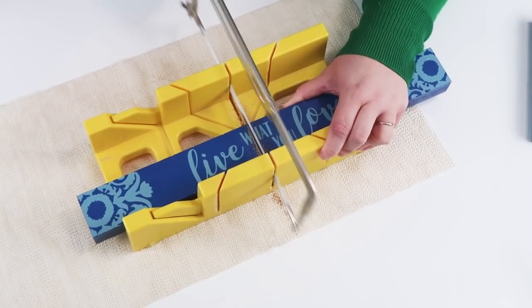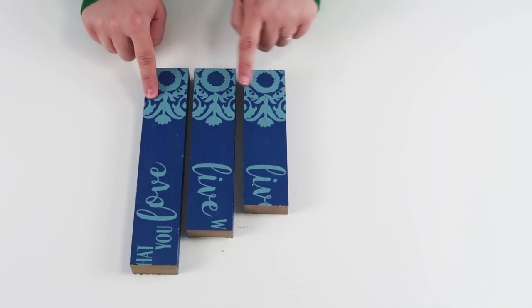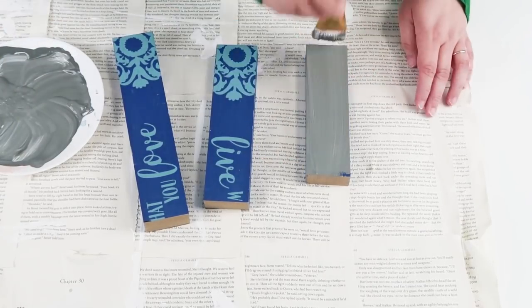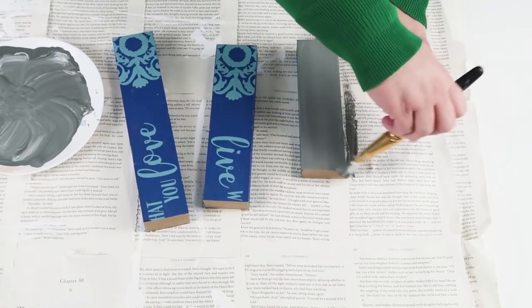Now I'm going to go ahead and make a marking so that I can get three different sizes: large, medium, and small. And then once I had those all cut out, I went ahead and painted them over with a really dark gray color.